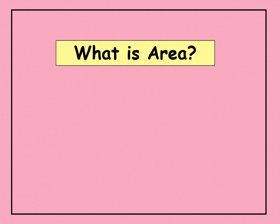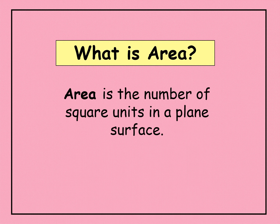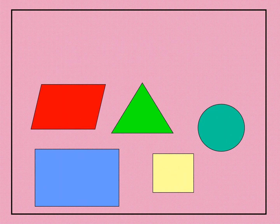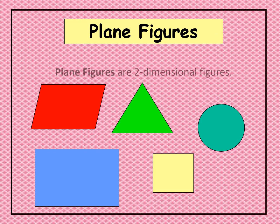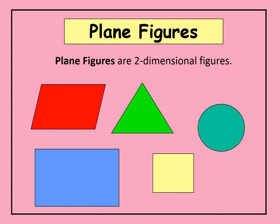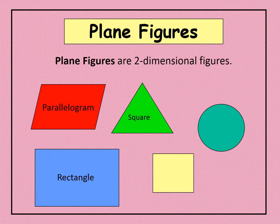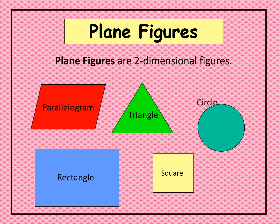When we say area, it is the number of square units in a plane surface. When we say plane figures, these are two-dimensional figures. Examples of plane figures include the parallelogram, rectangle, square, triangle, and circle.